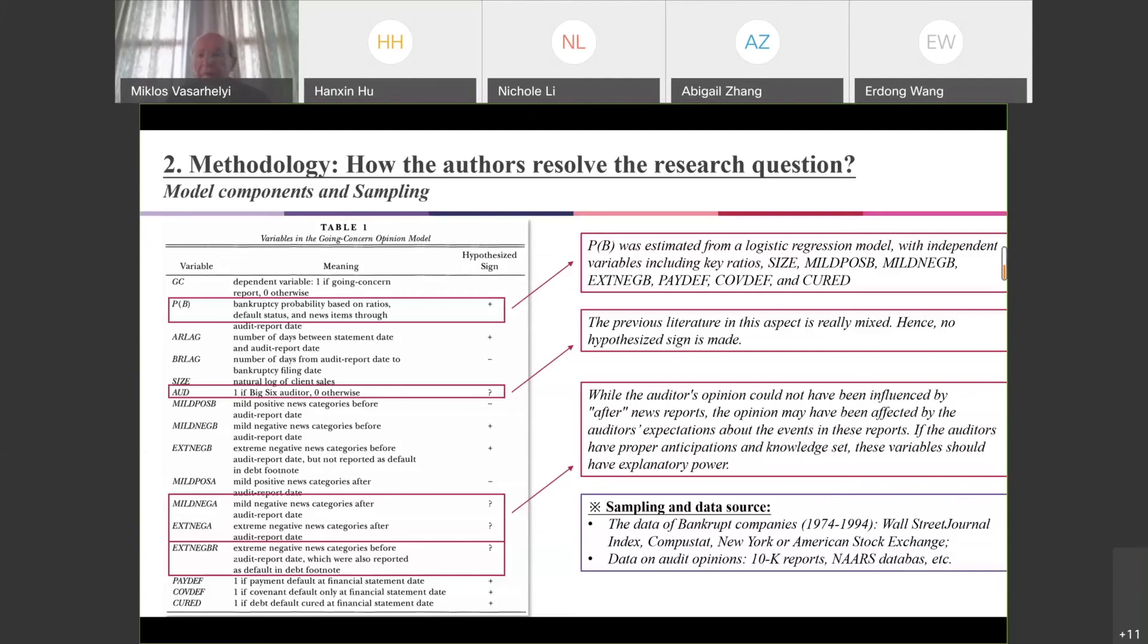Finally, he finds that the coefficient of this newly added variable is significant, which means that there exists some incremental effects of the reporting of the default items in the footnotes. Finally, we'll do conclusion. Let's review the research question again. This paper tried to explore after controlling the bankruptcy probability, which is used by the logistic regression, will the use of contrary information and mitigating factors have impacts on the ongoing concern modification decision?